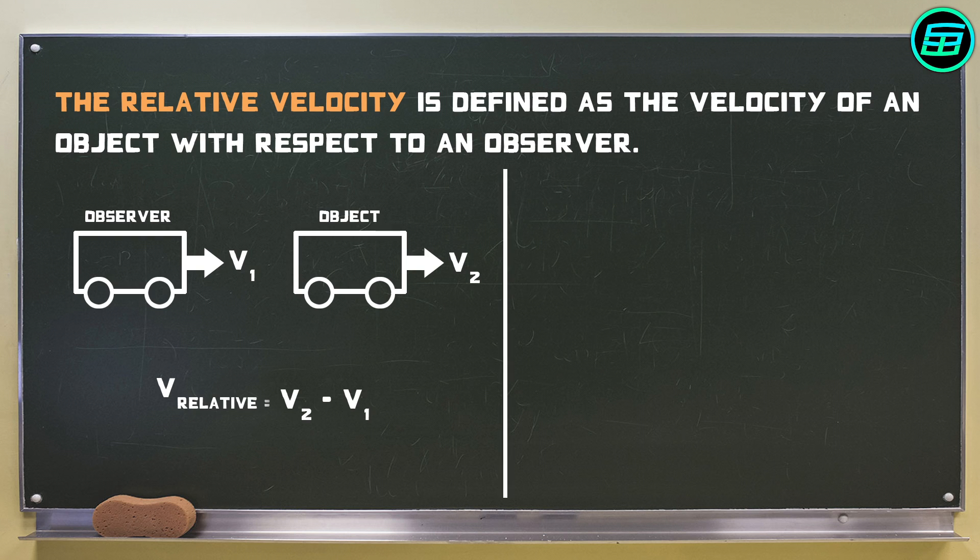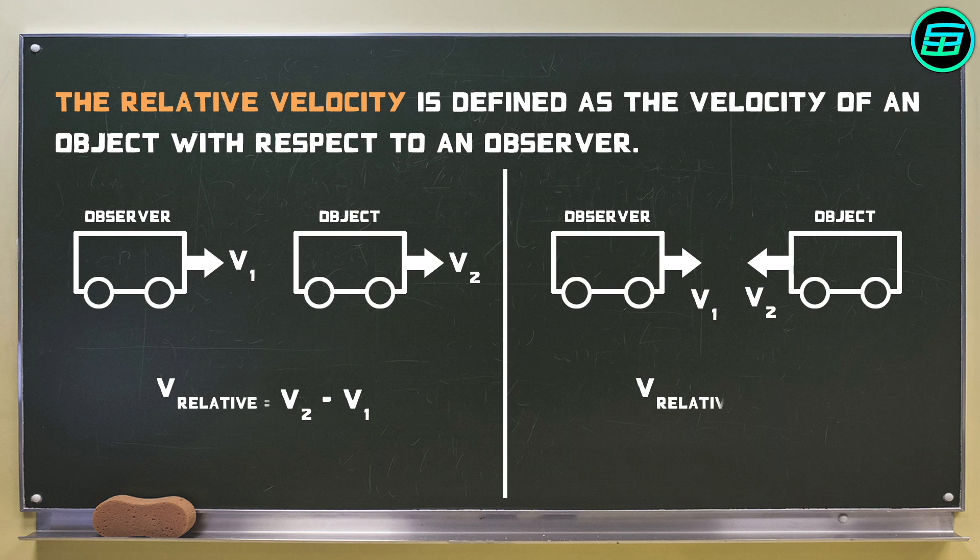Whereas if the objects are moving in the opposite direction, their relative velocity is the sum of their individual velocities.